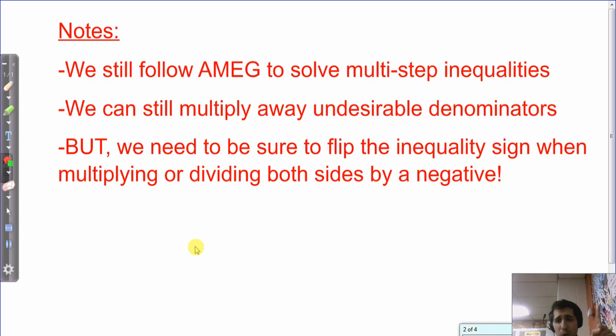Notes you need to take down. Number one, we still follow AMEG to solve multi-step inequalities, just like multi-step equations, because AMEG is telling us how to undo what's been done to isolate a variable. Follow the opposite of the order of operations to undo what's been done.